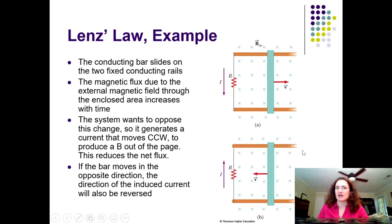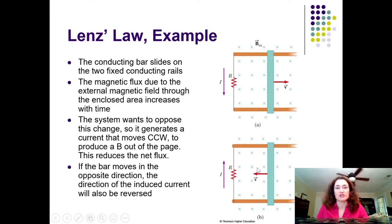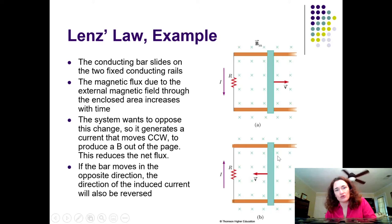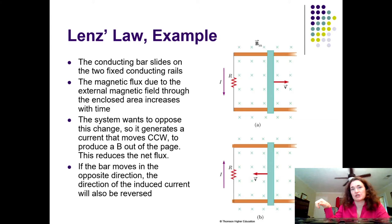Now let's look at the bottom figure. It's exactly the same setup except the bar is rolling to the left with constant speed V. In this case, the magnetic flux is decreasing because the area of the loop is getting smaller. In order to oppose the change, the current is going to flow in such a direction that the magnetic field also points into the screen — trying to increase the magnetic flux. That means the thumb points into the screen, so the current flows in a clockwise direction.